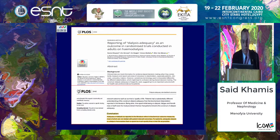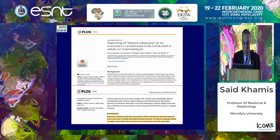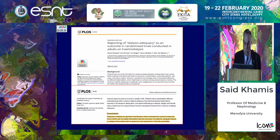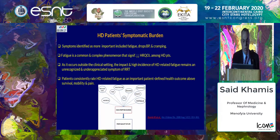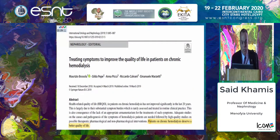This is the only article I found regarding the link between dialysis adequacy and post-dialysis recovery time, published last year. Its conclusion: adequacy of dialysis as reported in the literature refers to biochemical outcome measures, most of which are not related to patient-relevant outcomes. For patients, adequate dialysis is dialysis that enables them to spend as much quality time in their lives as possible. However, hemodialysis patients' symptomatic burden — including fatigue, dropping blood pressure, and cramping — cannot be mitigated, and we should try to improve these symptoms by every means available.